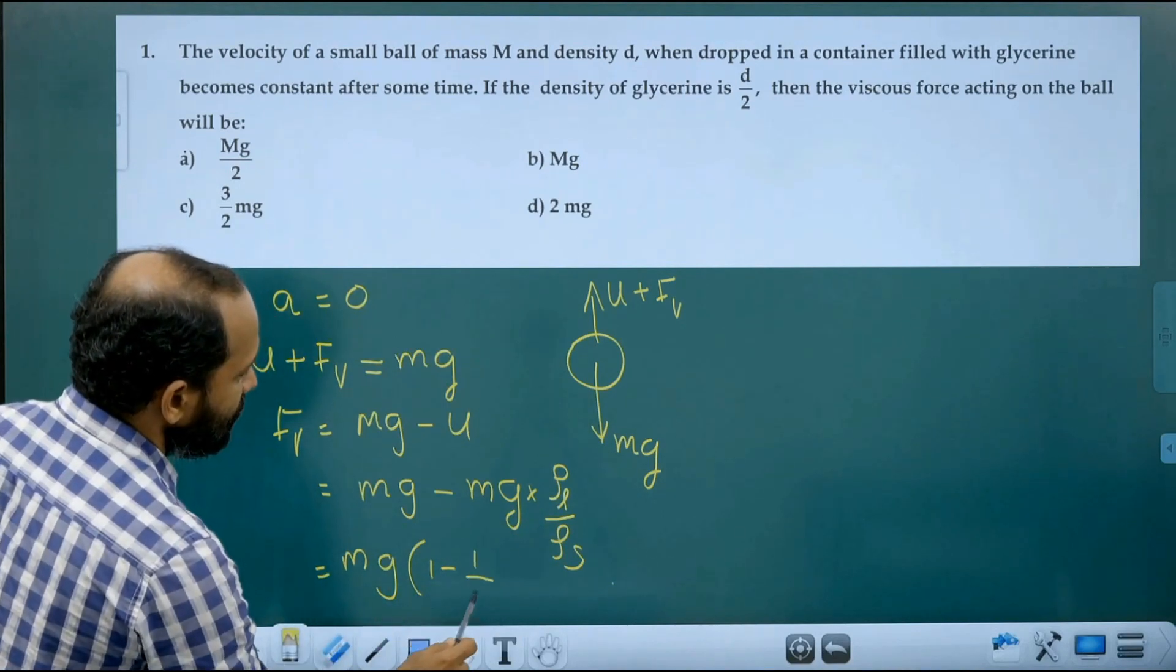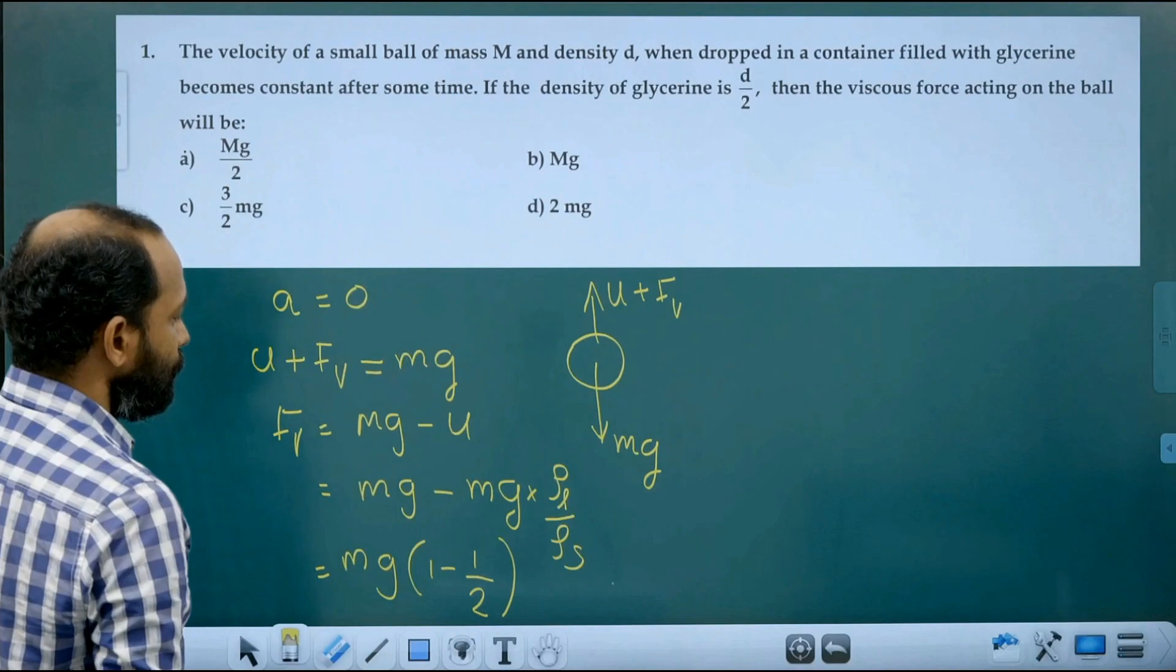What is rho L by rho S? That is 1 by 2, it is given. So that answer is mg by 2.